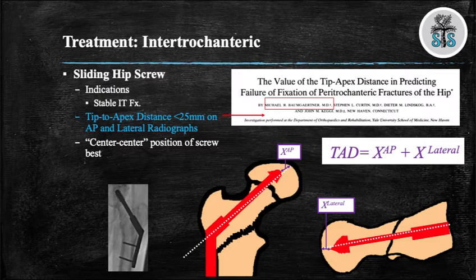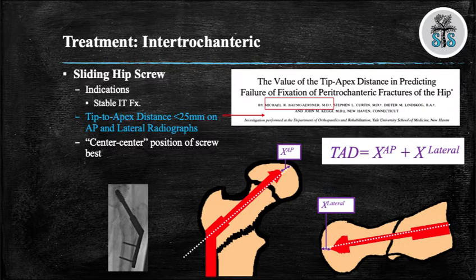Why should the screw be positioned in this location? This position is where the calcar is thickest and where the bone quality is best. The anterior superior quadrant has the worst bone quality and this is where you would have an increased risk of superior cutout. You want to insert the screw centrally to within 1 cm of the subchondral bone.